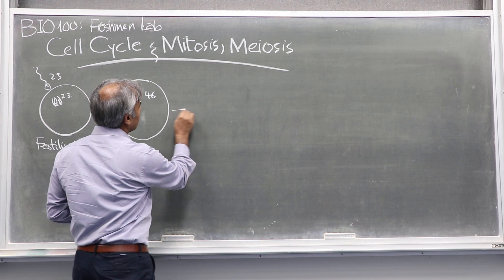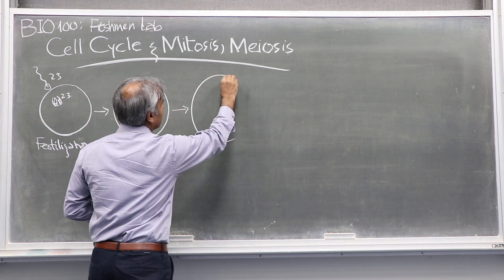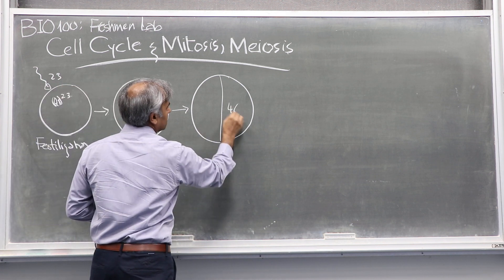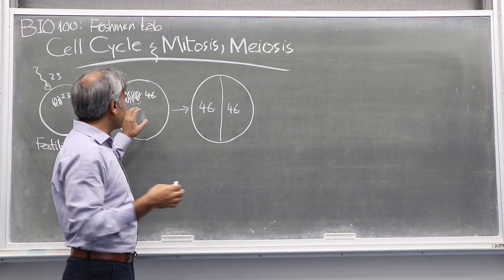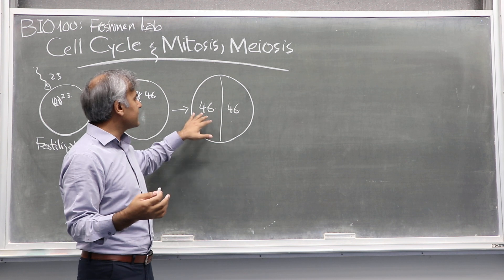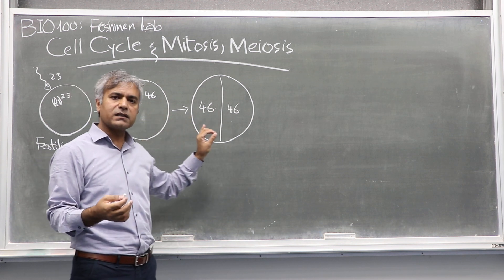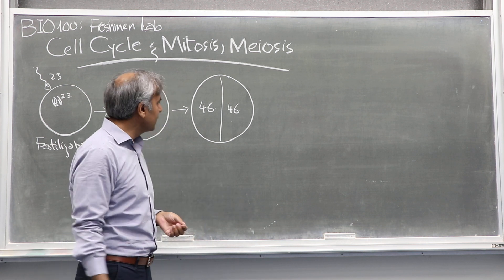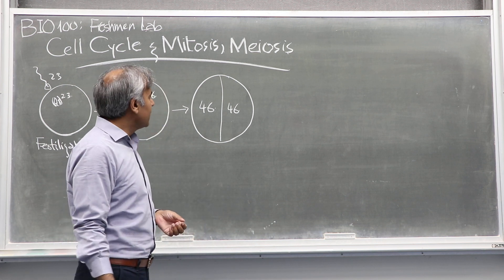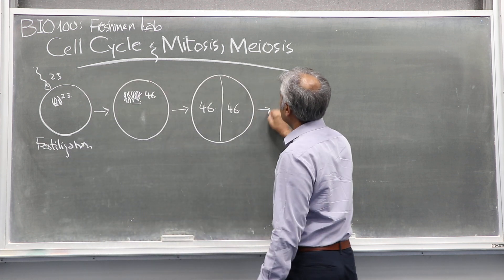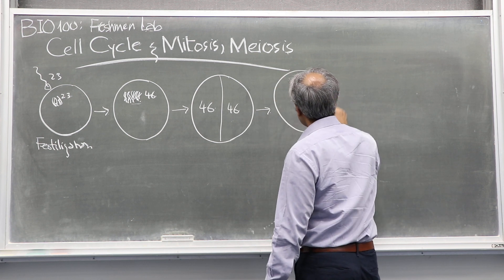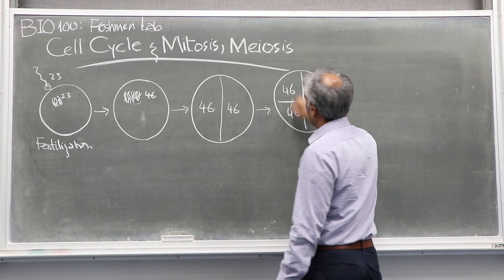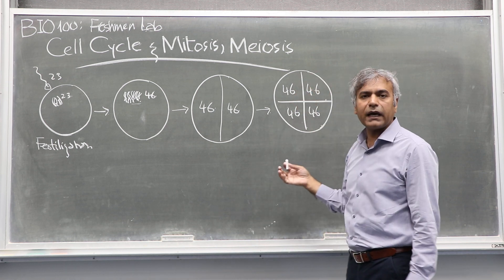What happens is this single cell divides into two identical cells, and these 46 chromosomes are duplicated in such a way that when the single cell divides into two cells, both cells are identical to the mother cell — that is the crux of mitosis. The two daughter cells are identical to the mother cell in terms of their number of chromosomes. These two cells again undergo mitosis, so you now have two cells divided into four cells, and all four daughter cells are identical because each one of them inherits 46 chromosomes.